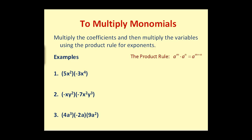To multiply monomials, we need to multiply the coefficients and then multiply the variables using the product rule for exponents, which is stated here.